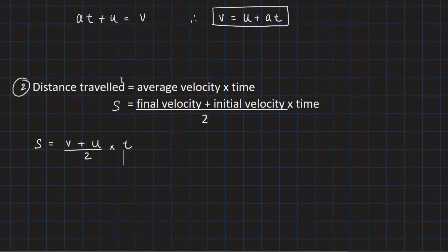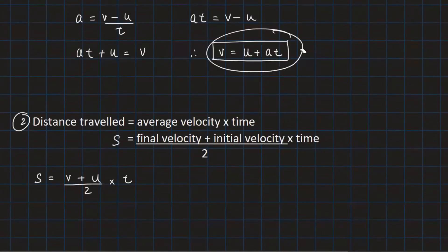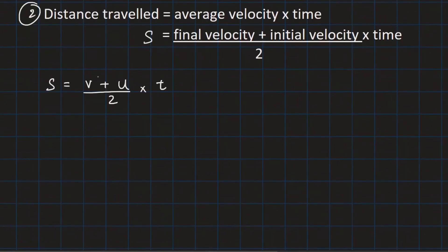Now in the previous working, we have derived this equation, v is equal to u plus at. Now in place of v, I will substitute u plus at plus u upon two into t. So in place of this v, I have substituted u plus at. So I get 2u plus at upon two into t.